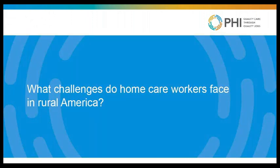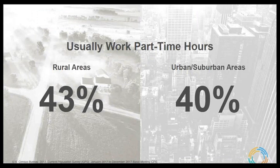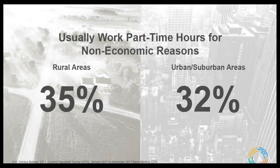The differences among rural and urban home care workers are more stark regarding job quality. We know that home care workers across the country face immense economic instability, but rural home care workers face unique challenges. They typically earn about 50 cents less per hour compared to their urban counterparts, and they're also more likely to work part-time — primarily because they're facing non-economic barriers such as health issues, restrictions on earnings due to retirement benefits, and unpaid caregiving responsibilities like caring for a child or a family member with disabilities.